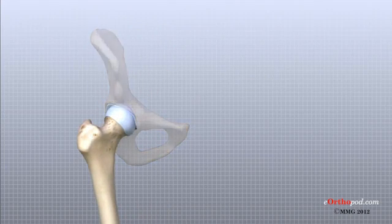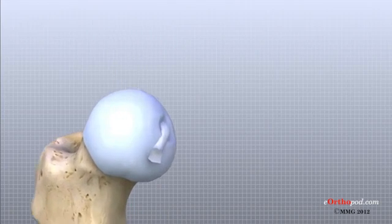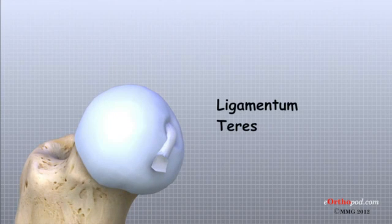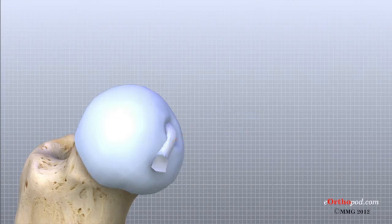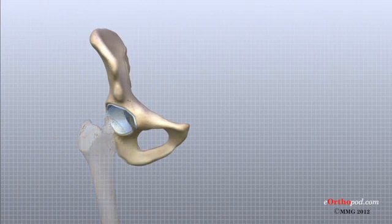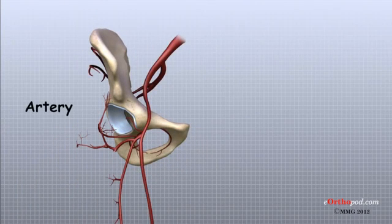A small ligament connects the very tip of the femoral head to the acetabulum. This ligament, called the ligamentum teres, doesn't play a role in controlling hip movement like the main hip ligaments. It does, however, have a small artery within the ligament that brings a very small blood supply to part of the femoral head.